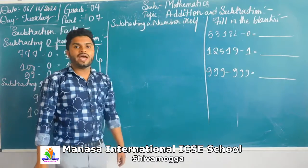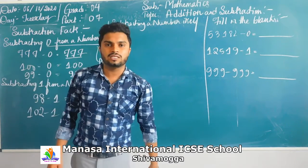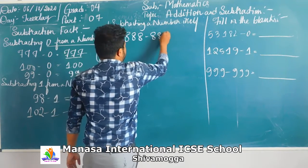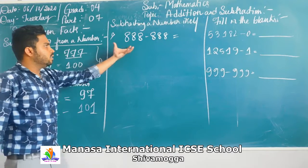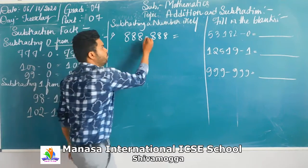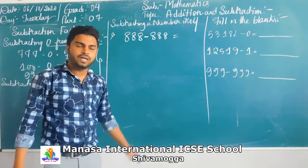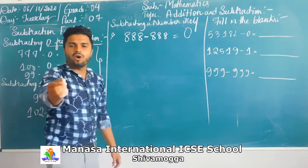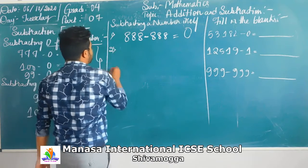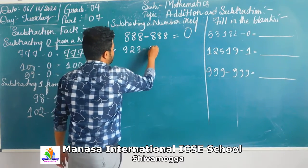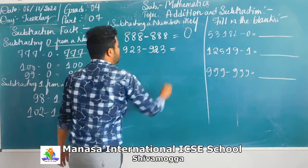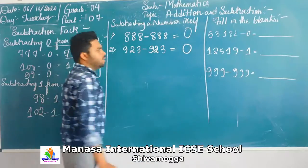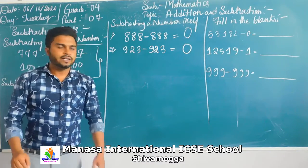The next concept is subtracting a number from itself. For example, if you have 8 minus 8, you get zero. Another example: 923 minus 923 — is the answer the same or different? It is the same, and it is nothing but zero.